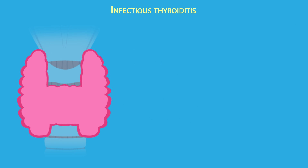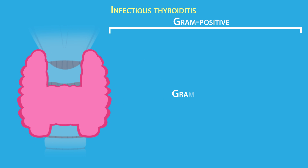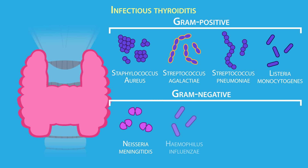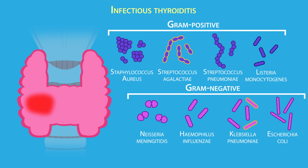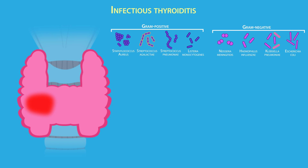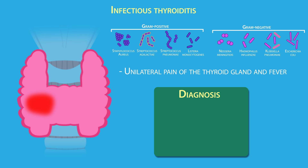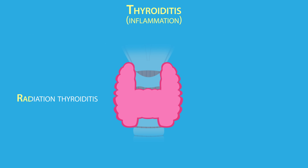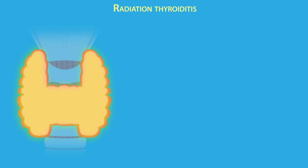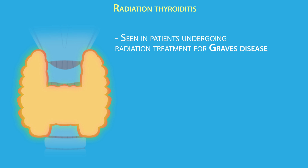Infectious thyroiditis is caused by gram-positive or gram-negative organisms such as Staphylococcus or Streptococcus, and is typically seen in immunocompromised patients. The acute form presents with a sudden onset of unilateral pain of the thyroid gland and fever. Diagnosis can be confirmed by the appearance of gram-positive or gram-negative cells in a culture from a thyroid gland biopsy.